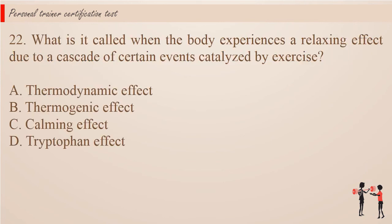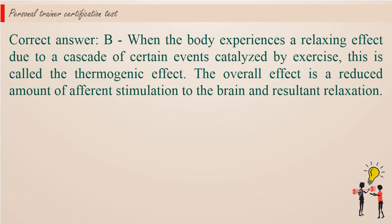Question 22. What is it called when the body experiences a relaxing effect due to a cascade of certain events catalyzed by exercise? a. Thermodynamic effect. b. Thermogenic effect. c. Calming effect. d. Tryptophan effect. Correct answer b. When the body experiences a relaxing effect due to a cascade of certain events catalyzed by exercise, this is called the thermogenic effect. The overall effect is a reduced amount of afferent stimulation to the brain and resultant relaxation.